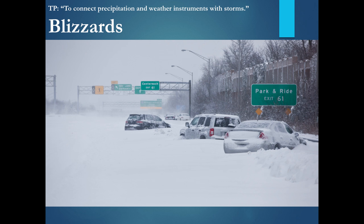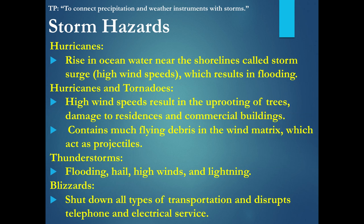Here are blizzard conditions on the LIE — a lot of cars getting stuck. Storm hazards for hurricanes include a rise in ocean water near shorelines, called storm surge, which results in flooding. For hurricanes and tornadoes, you have high wind speeds, uprooting of trees, damage to residences and commercial buildings, and flying debris that can act almost like missiles or projectiles, hurting people and damaging structures.